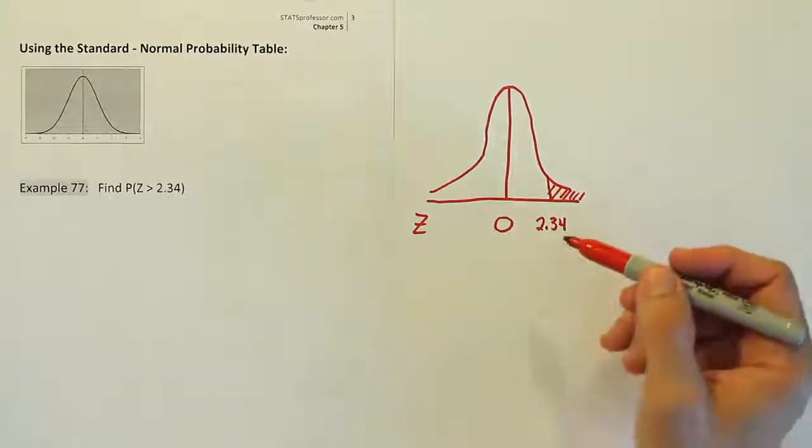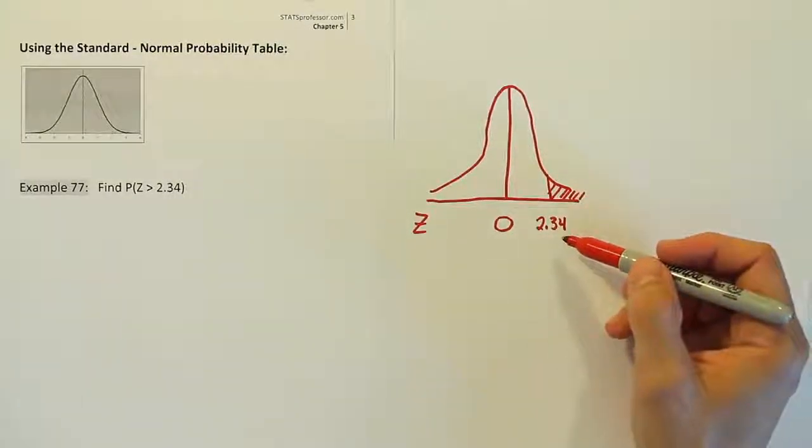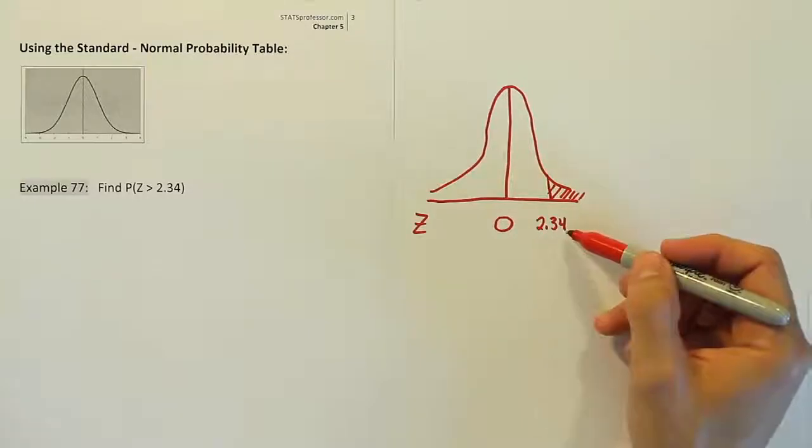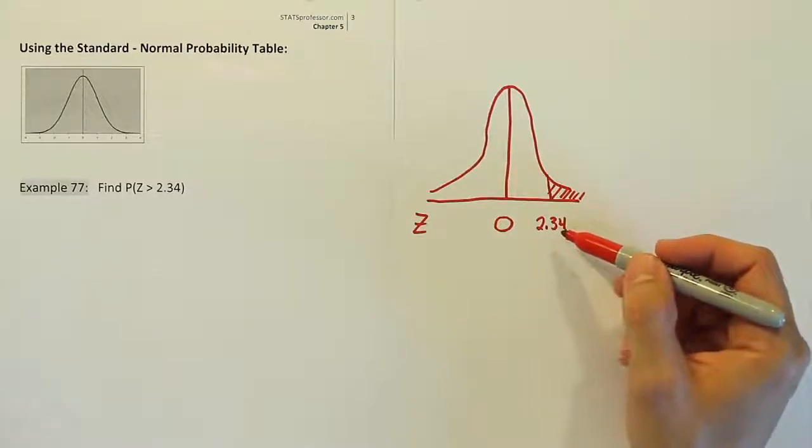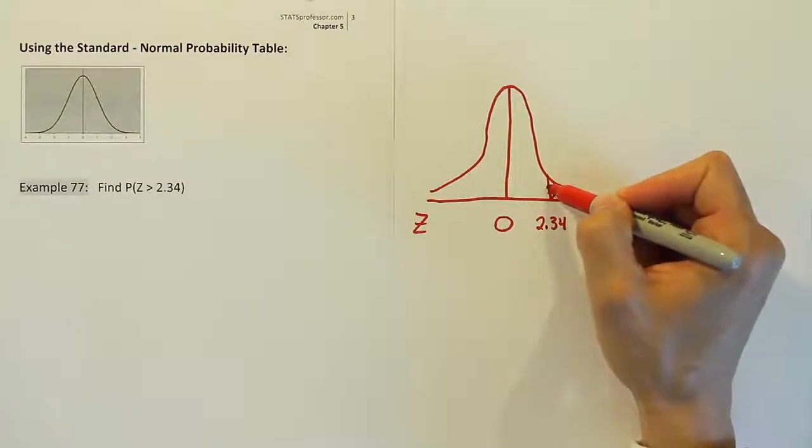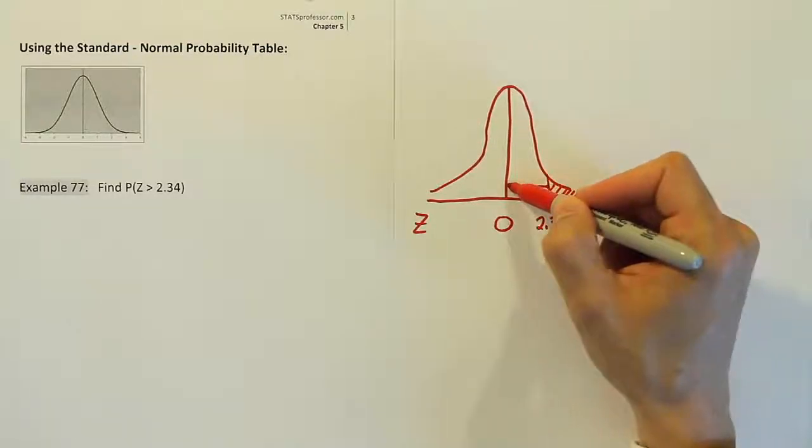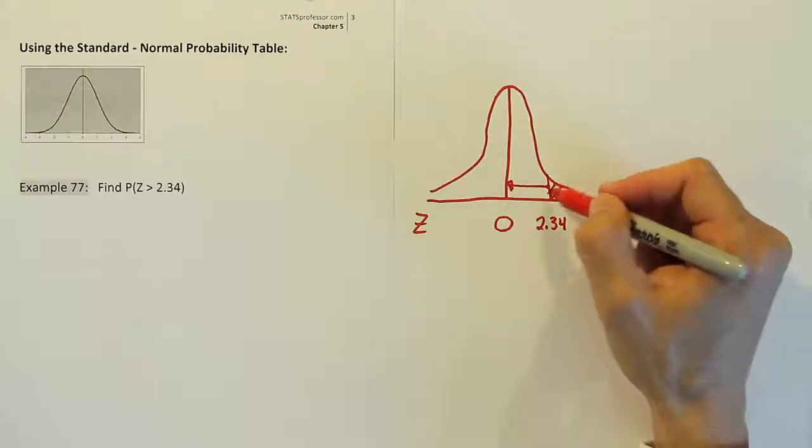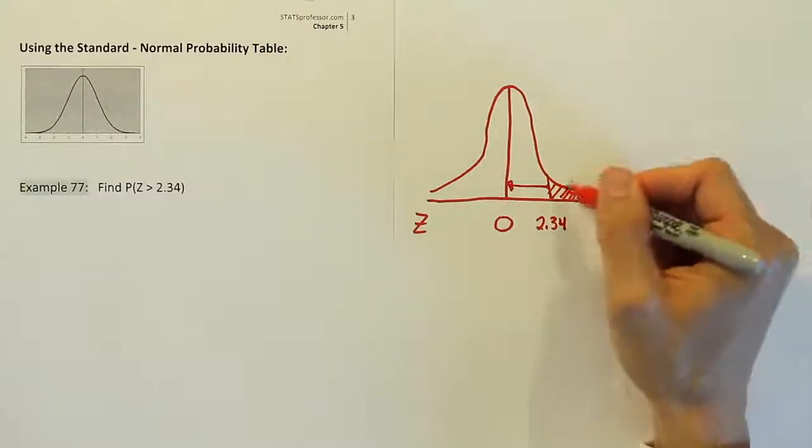Now before we go to the table, let's think about what the table is going to give us. We don't have anything else to do here except for look up this number on a z-table. And if I look up 2.34, remember what the table will give me. It gives me the area from here to here. That's what the table always does. It doesn't have the ability to give us this area.